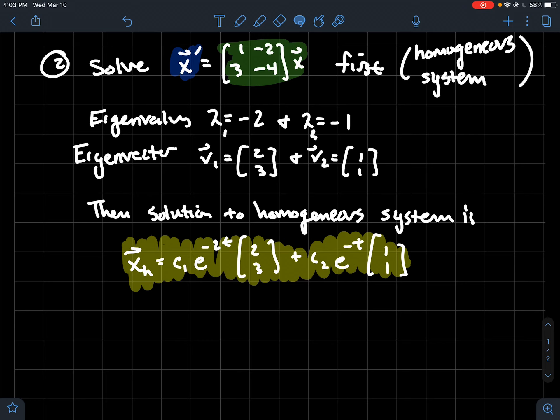Plus some constant c2 times e to the minus t, where that negative corresponds to the other eigenvalue minus one, and then that times its corresponding eigenvector one one.